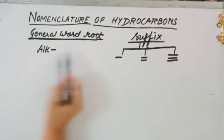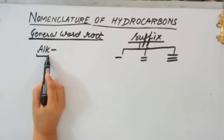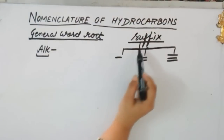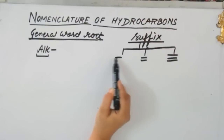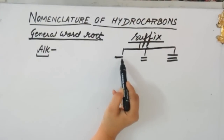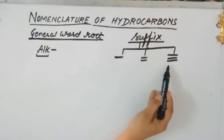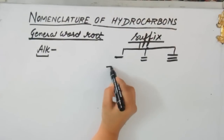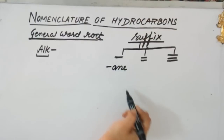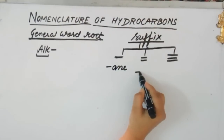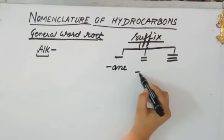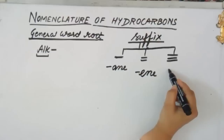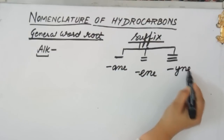The general word root allotted for a hydrocarbon chain is 'alk'. Now, moving to the suffix: if you find only a single bond in your compound, the suffix is 'ane'; if you find a double bond, the suffix is 'ene'; and if you find a triple bond, the suffix is 'yne'.